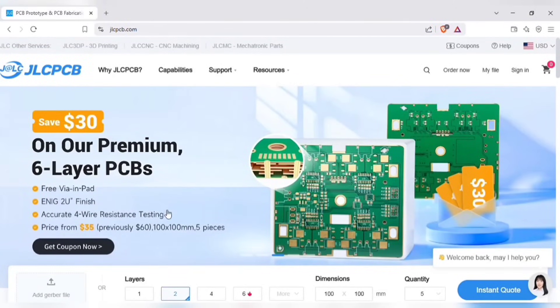Also don't miss JLCPCB's 6 layer PCB special, get $30 off with a coupon, and enjoy top quality 6 layer PCBs, plus ENIG finish, and no engineering fees for vias in pads.